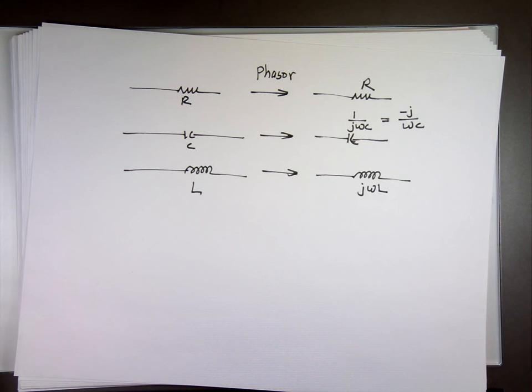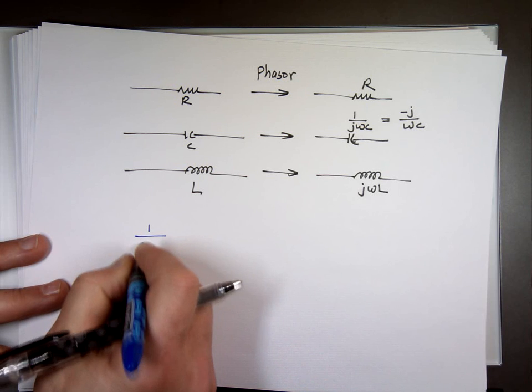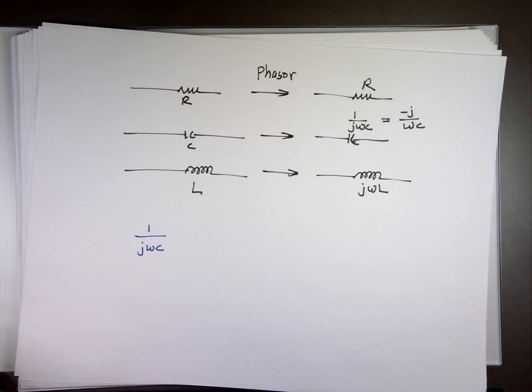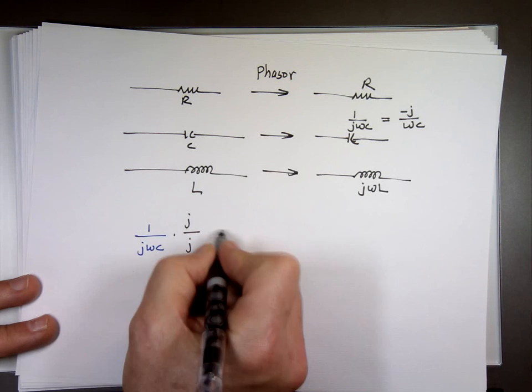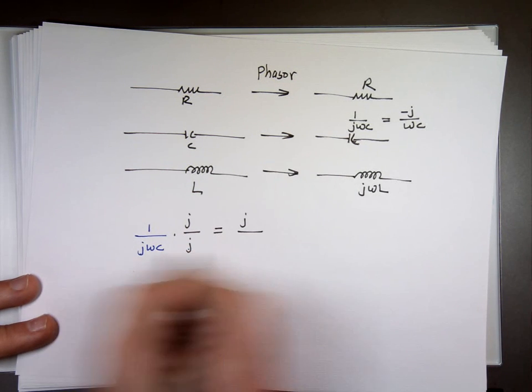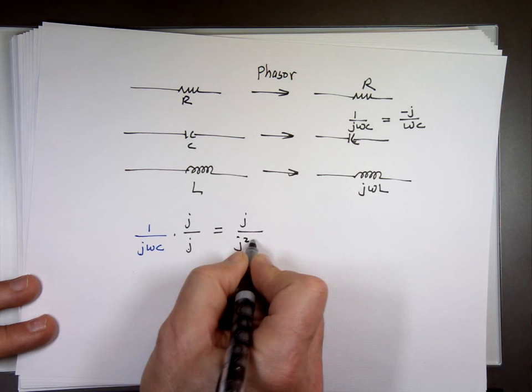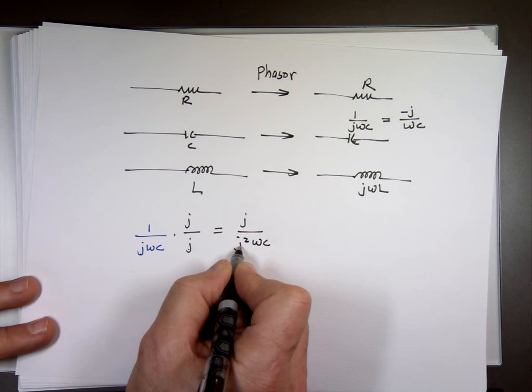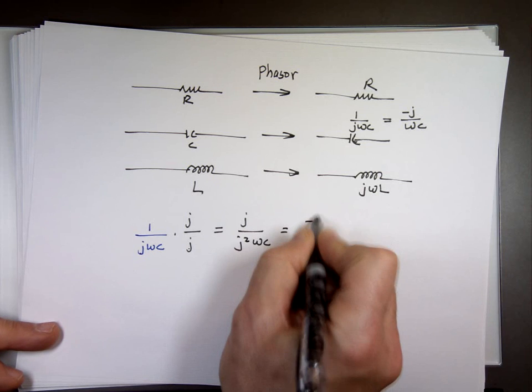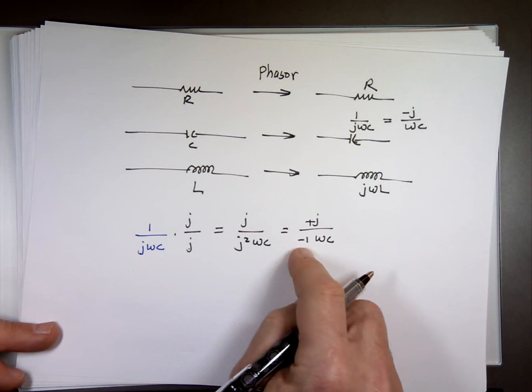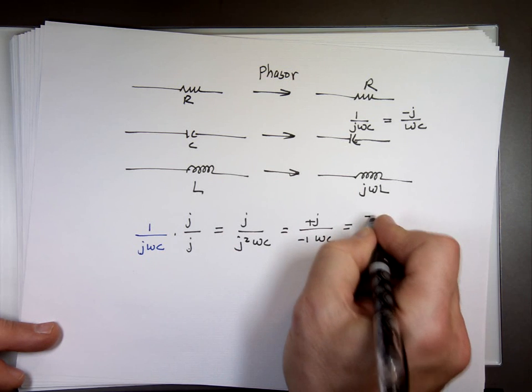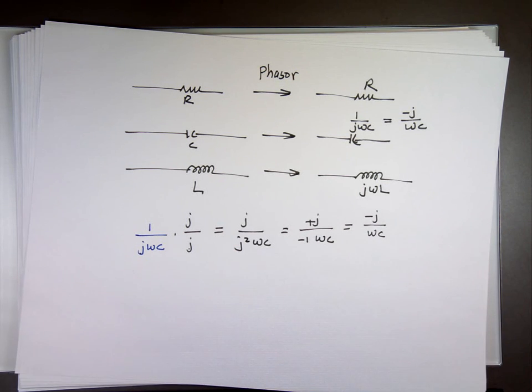And again, it came from this math. You say, I need to rationalize this. I'll multiply the top and the bottom by j. What's 1 times j? j. What's j times j? j²ωC. What's j squared equal to? Negative 1. Oh, that's j here. What's j divided by minus 1? Negative j over ωC. So a lot of times, you see me write -j/ωC instead of 1/jωC. It's the same thing.